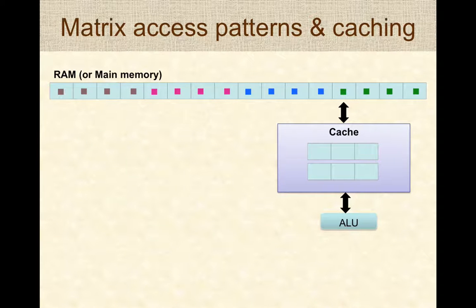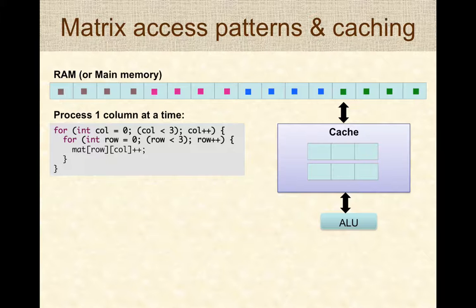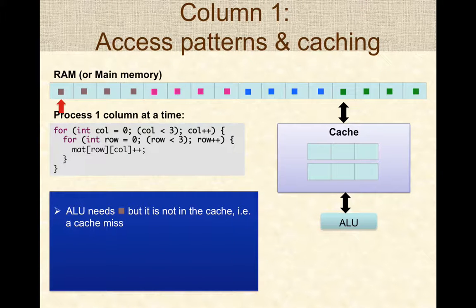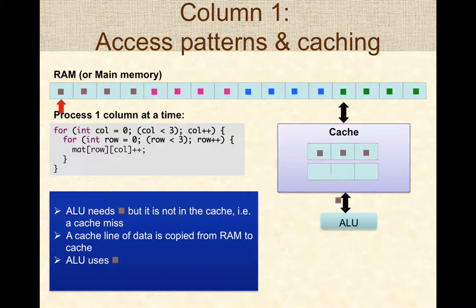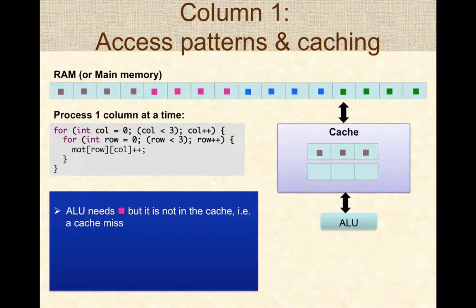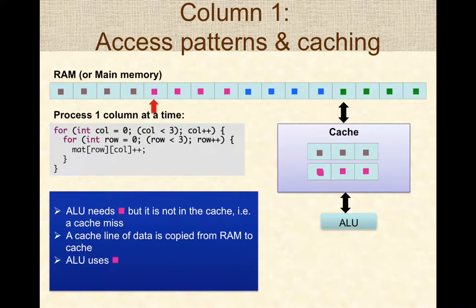Now consider a column-major access of the data. Column-major access goes to the first element of each column, followed by the second element, and so on. When the ALU needs the first element, it's not in cache, so that block is copied to the cache line. In the next iteration, the first element of the second row is accessed — it's also not in cache, so it's copied to cache before the ALU uses it.